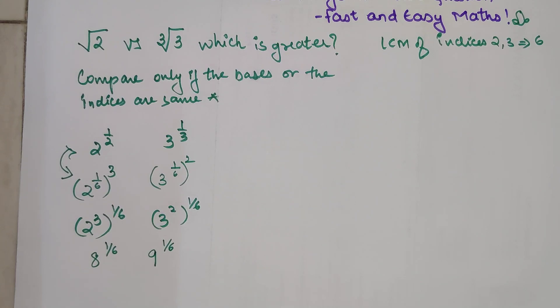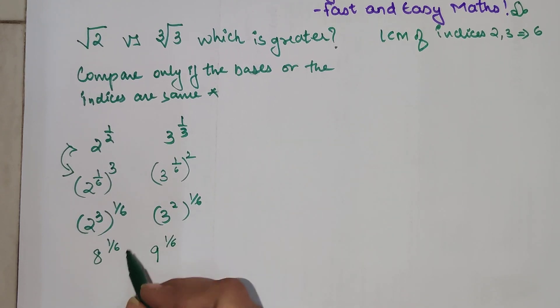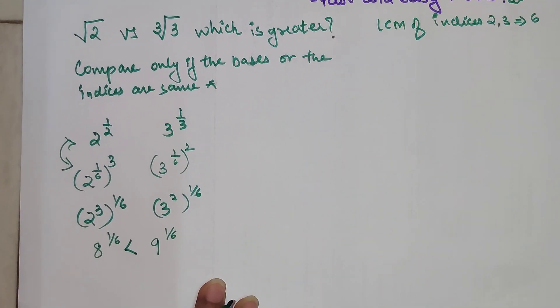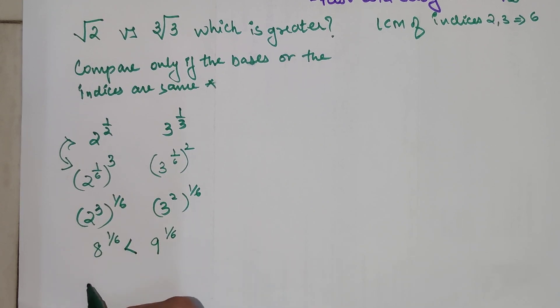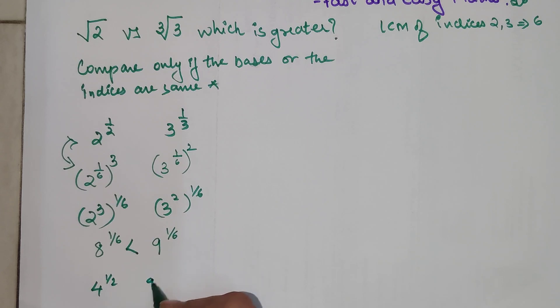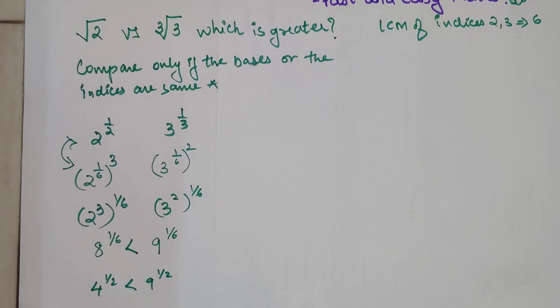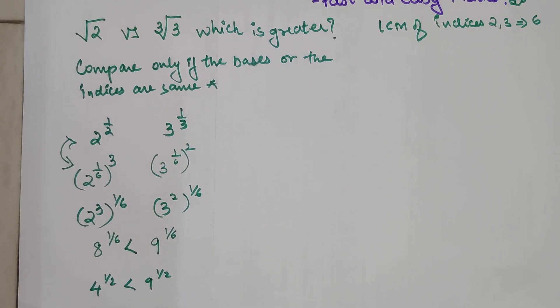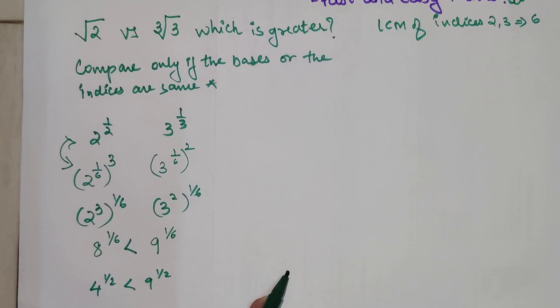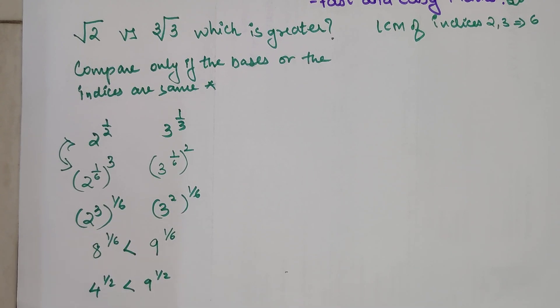So now tell me: is 8 raised to 1 by 6 greater or smaller than 9 raised to 1 by 6? It is actually smaller. If you have any difficulty understanding that, think about it this way: 4 raised to 1 by 2 and 9 raised to 1 by 2. This becomes 2 and this becomes 3. So in this way I can say that 8 raised to 1 by 6 is smaller than 9 raised to 1 by 6.